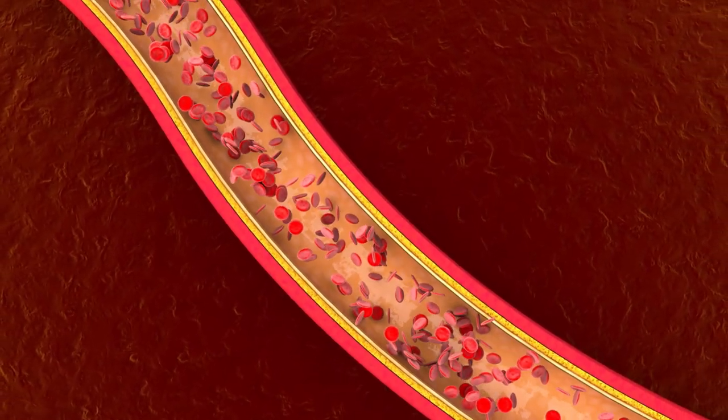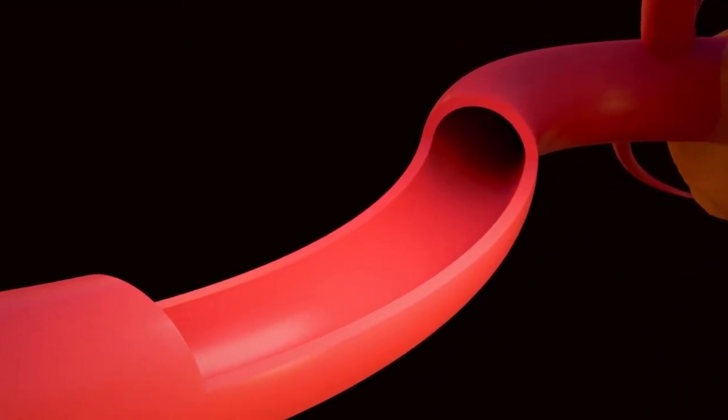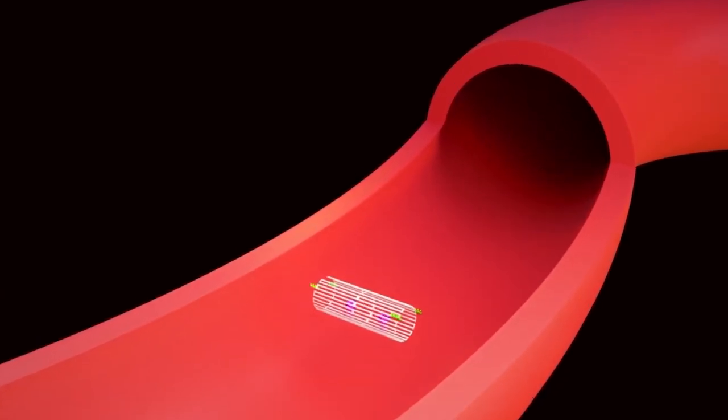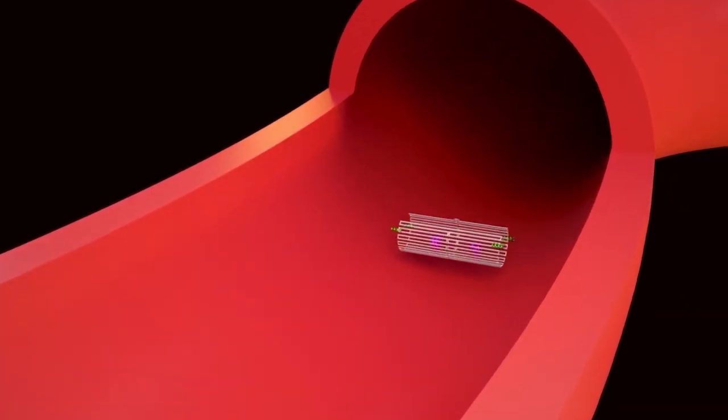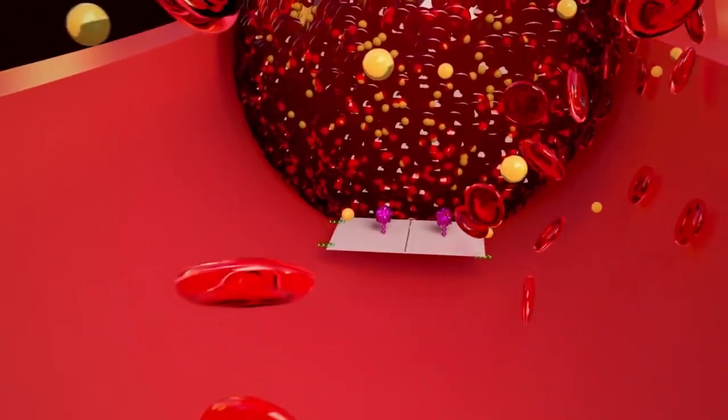This protein, unlike others, is not found on the surface of healthy cells. The nanorobots opened up and delivered the thrombin after locating and binding to the tumor blood vessel surface. This caused clotting in blood vessels that fed tumor growth, cutting off the blood supply, and killing tumor tissue.